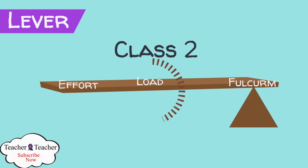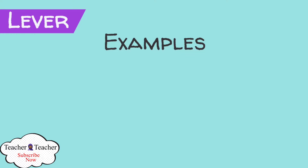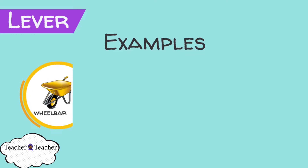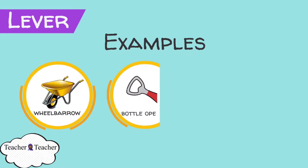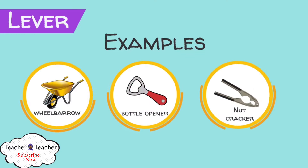In the second class of lever, the load is in between the fulcrum and the effort. The best examples of second class levers are wheelbarrow, bottle opener, and a nutcracker.